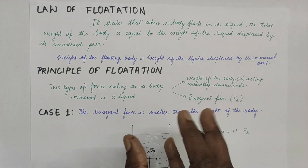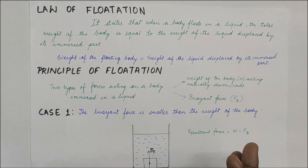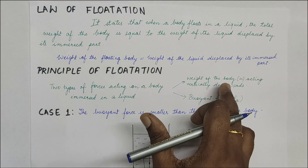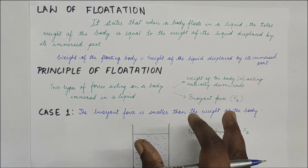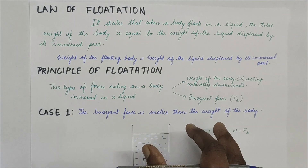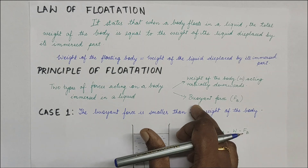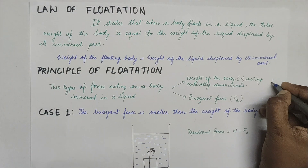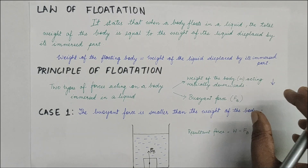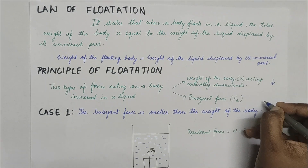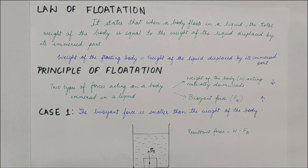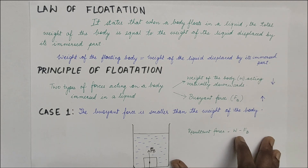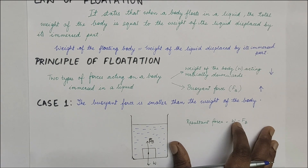To understand the principle of floatation, you need to know about two kinds of forces acting on any floating substance. One is the weight of the body, which always acts downward due to gravity. The opposite force is the buoyant force, which tries to make the substance float — it is an upward force. There are three cases to consider.